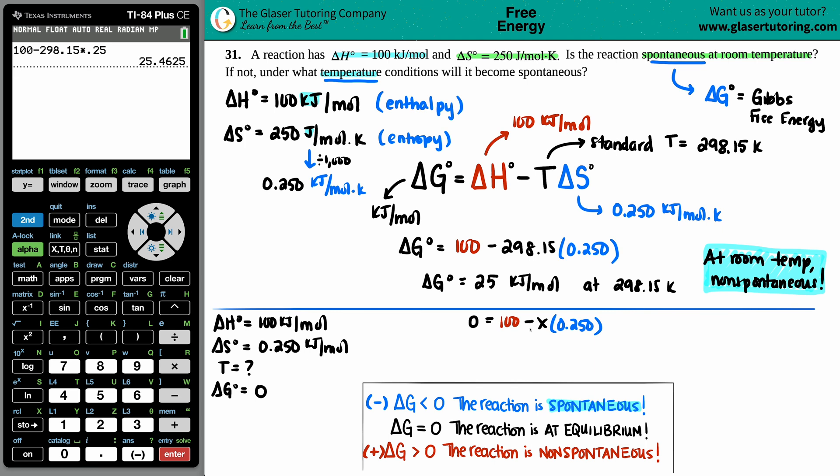Now use your algebra to solve for X. We subtract by 100 on both sides. This cancels. Negative 100 equals negative 0.250 X. Divide on both sides by negative 0.250. My temperature is going to be a positive value. 100 divided by 0.25 equals 400. So 400, and the units here are Kelvin. If you're using this formula, that temperature can only be in Kelvin. This is at a delta G of zero.